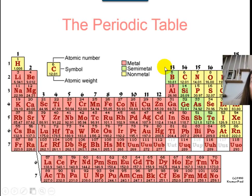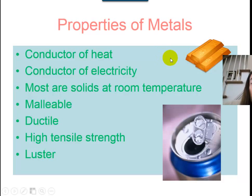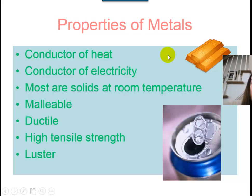Let's look at the properties of each one. The properties of metals include: think of some metals you know, like aluminum, iron, or copper — they're really good conductors of heat and electricity. That's why we make wires out of them, and that's why we use them on our pots and pans in the kitchen.